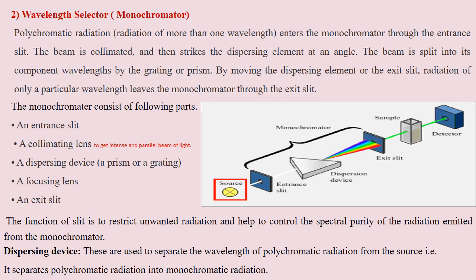The function of the monochromator: when polychromatic radiation — that is radiation from the light source having more than one wavelength — enters the monochromator through the entrance slit, it is collimated into a parallel beam of light. By striking at a particular angle, the beam is split into components of different wavelengths by a prism or grating. Then, by moving the dispersing element or the exit slit, radiation of only a particular wavelength is selected and falls on the sample under investigation.